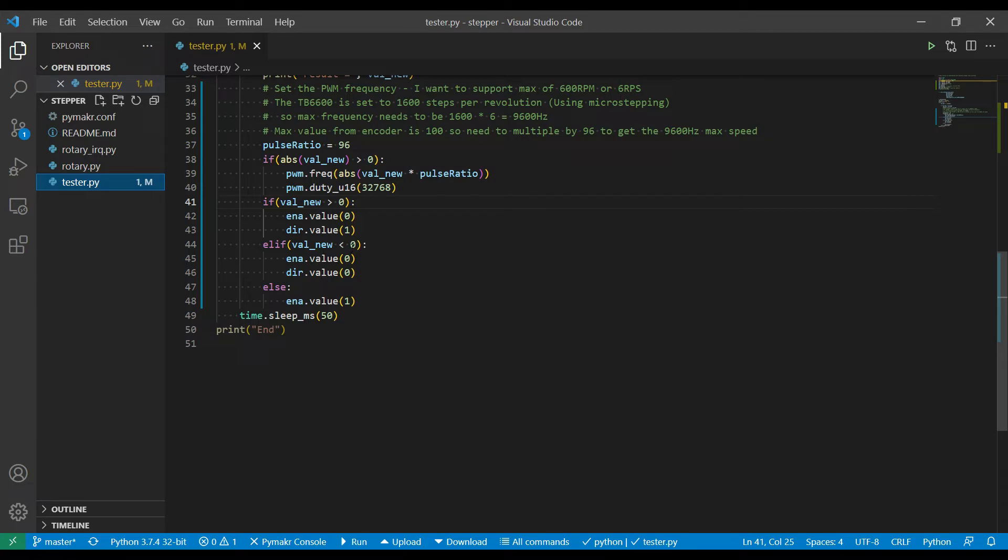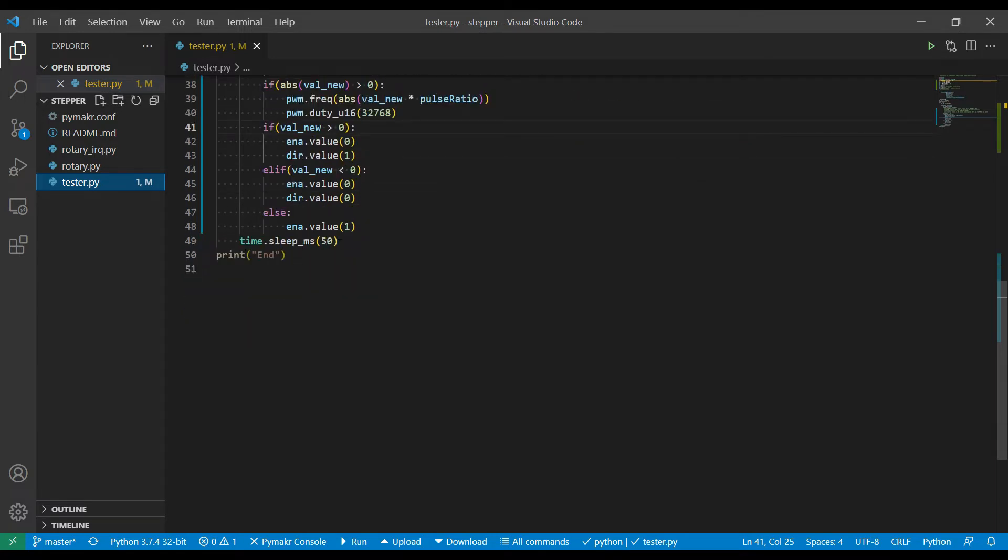If our rotary encoder value is a negative value—and I should have said back there that's going to be between negative 100 and positive 100—then again it's going to enable the driver and the stepper motor, but this time it's going to set the direction to zero. So if it's a negative value, the direction is going to be the opposite direction to a positive value. And then it just goes to sleep and it goes around in that loop. So a very simple way of just controlling the motor by setting the pulse width modulation to the required value and the enable and direction lines to appropriate values.